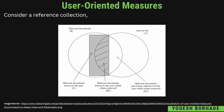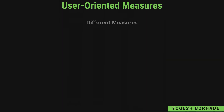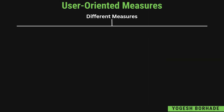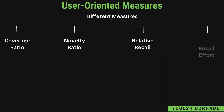While discussing precision and recall, we have seen that one set is relevant documents and another is retrieved documents, and the intersection part denotes retrieved and relevant documents. Now we will see the formulas under user-oriented measures. Basically, there are four different measures: first is the coverage ratio, second is the novelty ratio, third is the relative recall, and fourth is the recall effort. We'll see them one by one.